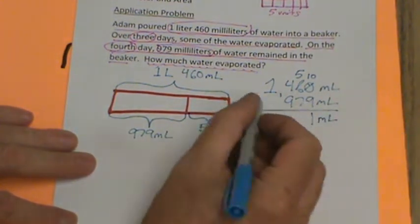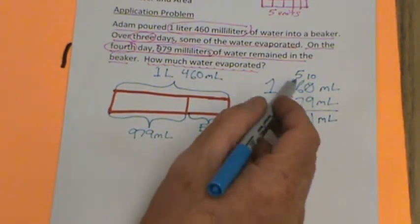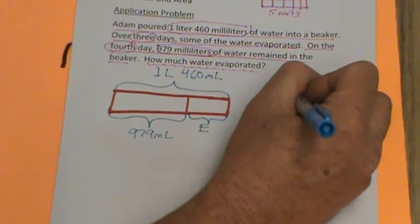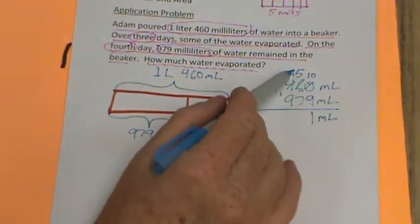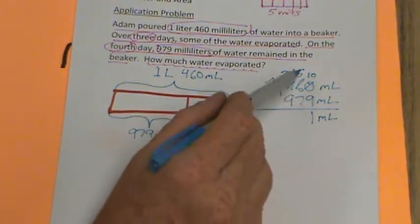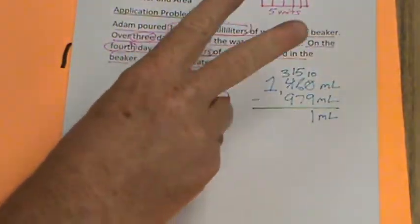10 minus 9 is 1. Before I forget, I'm going to put my milliliters there. Then we have 70 milliliters. Can't subtract 70 from 50, so we're going to decompose from the hundreds. This will become a 3, and that will become a 15. 15 minus 7. If you can't do that in your head, just count up. 8, 9, 10, 11, 12, 13, 14, 15.